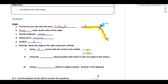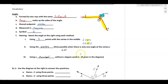Another way to name an angle is using just the vertex. This is only possible if there's only one angle at that vertex. Since there's only one angle here, we can name it simply angle W. The last way is using a number — that number does not have a degree symbol. Generally those numbers are less than 10, so you'll see angle 1, angle 2, angle 3.